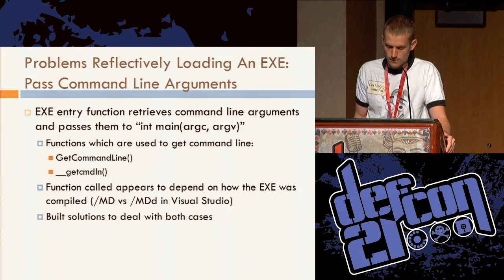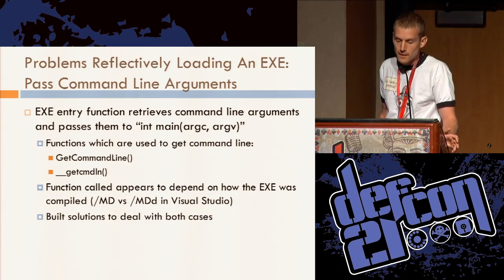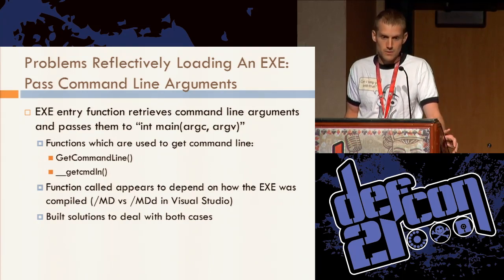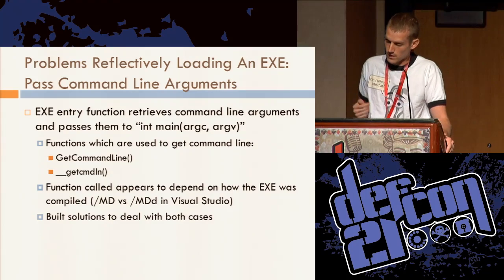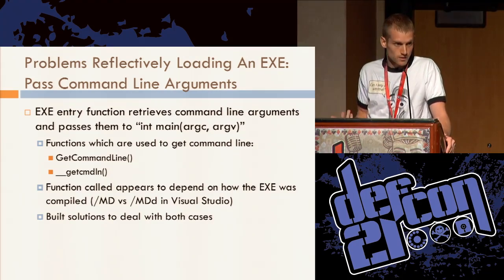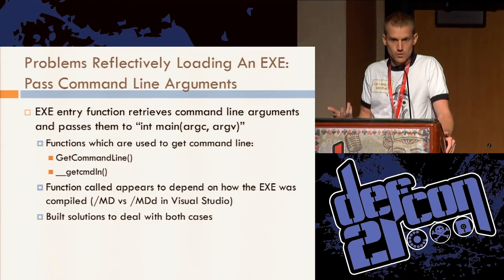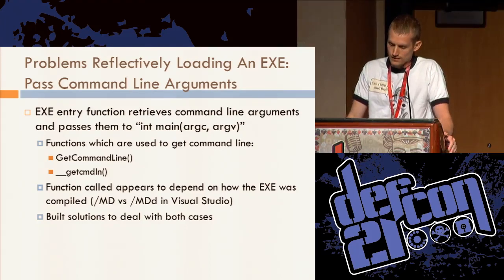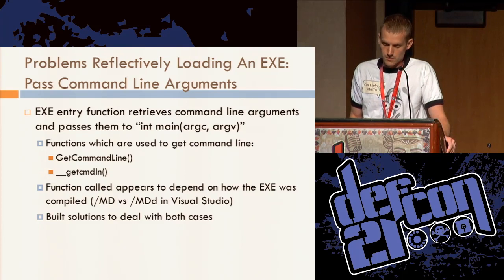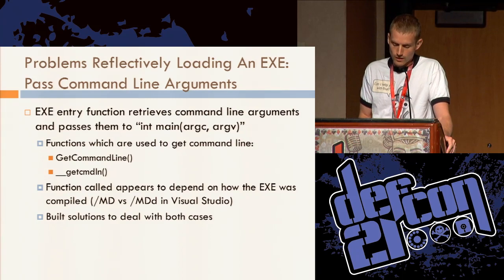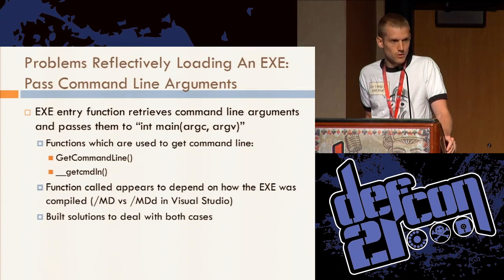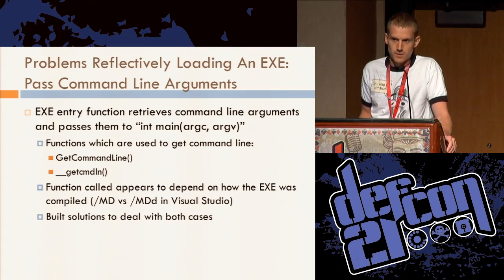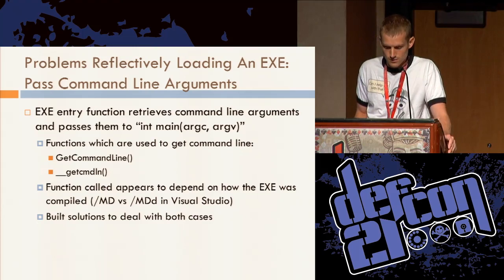Another problem with reflectively loading an EXE is passing command line arguments. The arguments it retrieves are going to be the ones PowerShell was started with, since you're running inside the PowerShell process. I first tried overwriting the string in the Process Environment Block (PEB) where command line arguments are stored, but that doesn't work. The way an EXE normally retrieves its arguments is by calling GetCommandLine or __getmainargs, which are provided by two different DLLs. When those DLLs are initially loaded, they cache a copy of the command line arguments, so overwriting the PEB doesn't overwrite the cached copy.